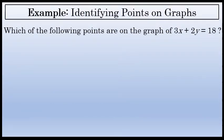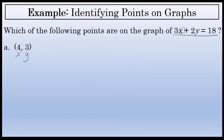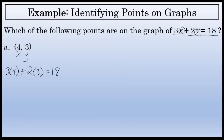Now let's practice identifying points on graphs of linear equations without actually looking at the graph. For example, let's determine if the point (4, 3) is on the graph of 3x plus 2y equals 18. To determine this, we'll substitute the first value in the ordered pair for x and the second value for y into the equation and see if that results in a true statement. Substituting a 4 for x would result in 3 times 4 as the first term. Substituting a 3 for y would result in 2 times 3 for the second term on the left side of the equation. We're testing to see if that equals 18 or not.